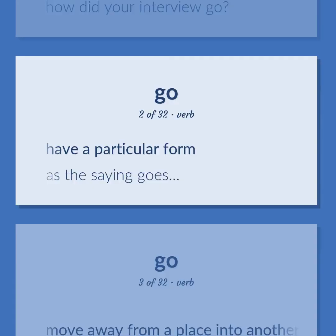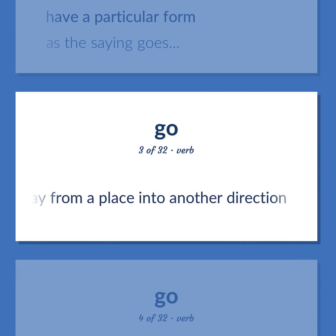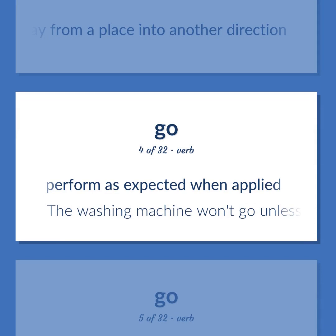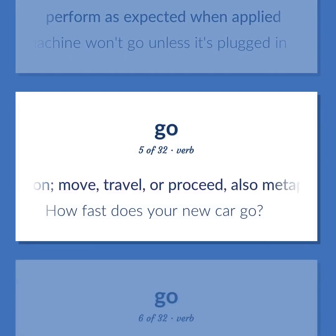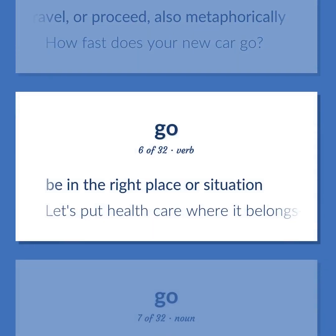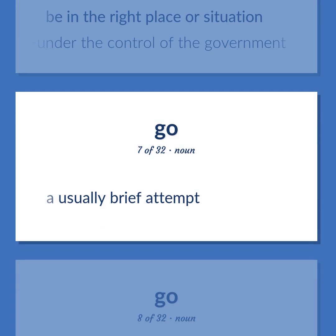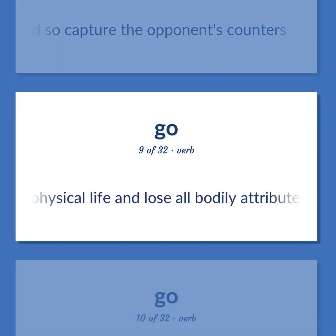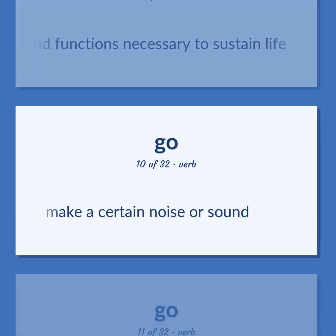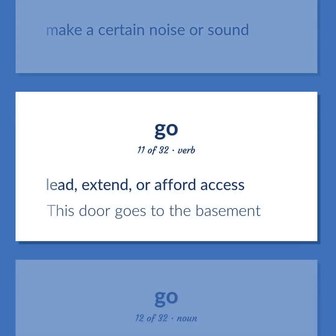Move away from a place into another direction. Perform as expected when applied. The washing machine won't go unless it's plugged in. Change location; move, travel, or proceed, also metaphorically. How fast does your new car go? Be in the right place or situation. Let's put healthcare where it belongs — under the control of the government. A usually brief attempt. A board game for two players who place counters on a grid; the object is to surround and capture the opponent's counters. Pass from physical life and lose all bodily attributes and functions necessary to sustain life. Make a certain noise or sound. Lead, extend, or afford access. This door goes to the basement.